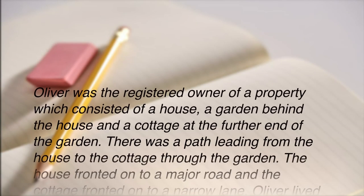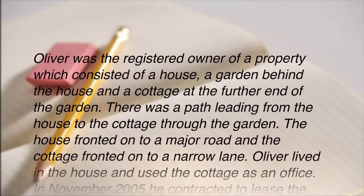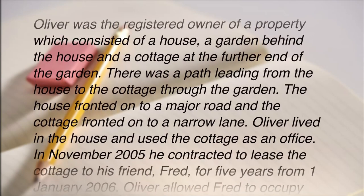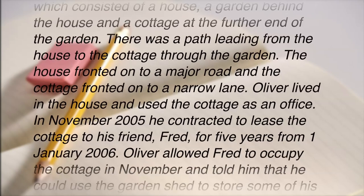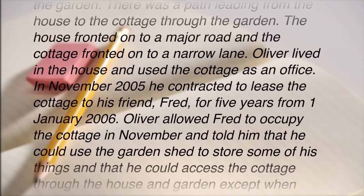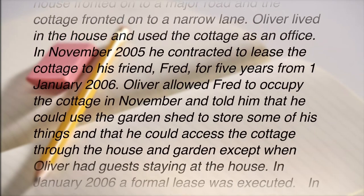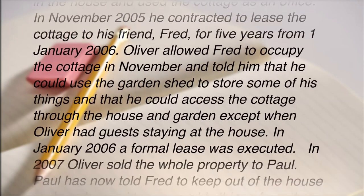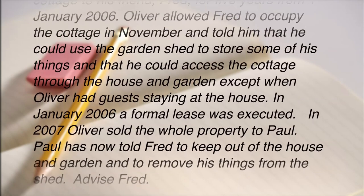The question reads: Oliver was the registered owner of a property which consisted of a house, a garden behind the house, and a cottage at the further end of the garden. There was a path leading from the house to the cottage through the garden. The house fronted onto a major road and the cottage fronted onto a narrow lane. Oliver lived in the house and used the cottage as an office. In November 2005 he contracted to lease the cottage to his friend Fred for five years from 1 January 2006. Oliver allowed Fred to occupy the cottage in November and told him that he could use the garden shed to store some of his things, and that he could access the cottage through the house and garden except when Oliver had guests staying at the house.